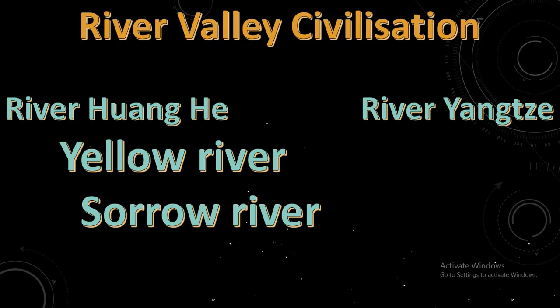This Chinese civilization has flourished along two rivers — the Huang He and the other river valley — that's why it's also called a river valley civilization. Why did these civilizations flourish along river valleys? Because people hardly need water for their survival, for food, for washing, for cultivation, and even for their cattle.